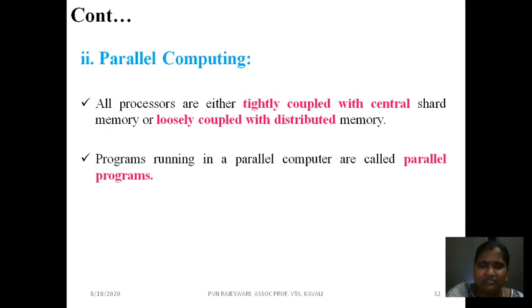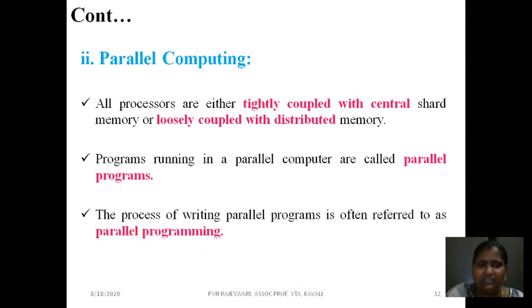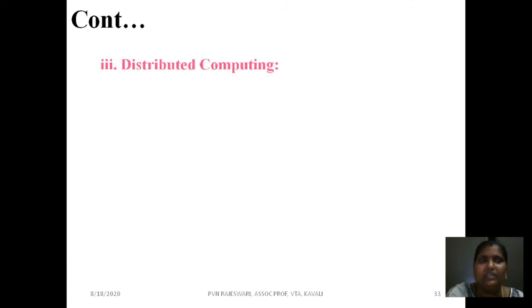With parallel computing, many computers work on one application — that application is shared across multiple systems for simultaneous execution. Programs running in parallel computing are called parallel programs, and doing that programming is called parallel programming.